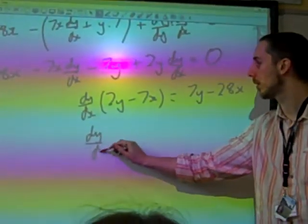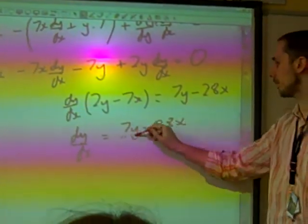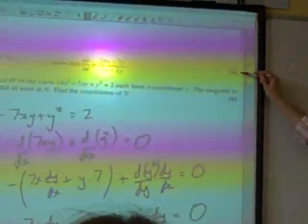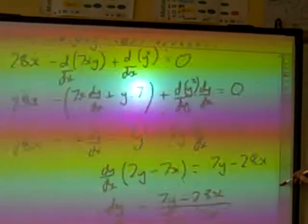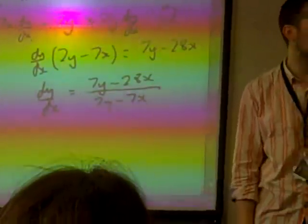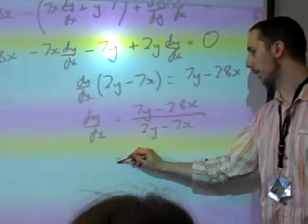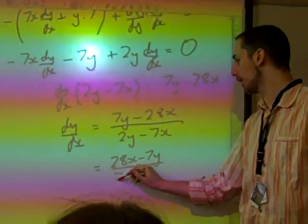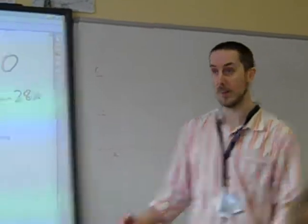So dy/dx is (7Y minus 28X) over (2Y minus 7X). Is that a problem? Because we could just take minus 1 out of the top and bottom. I'll write (28X minus 7Y) over (7X minus 2Y), because all we've done is multiply the top and bottom by minus 1. Cool.